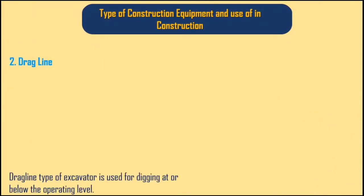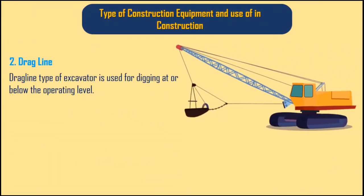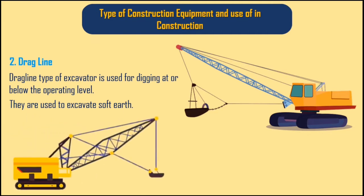2. Drag Line. Drag line type of excavator is used for digging at or below the operating level. They are used to excavate soft earth.